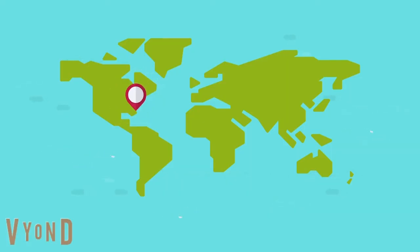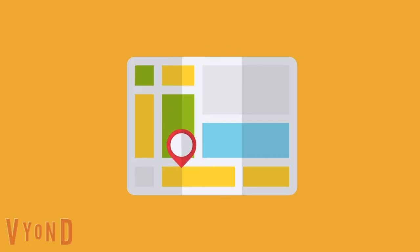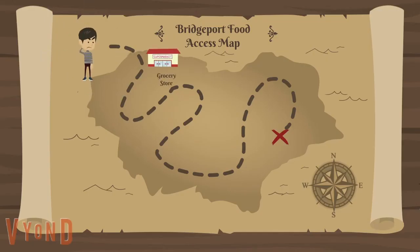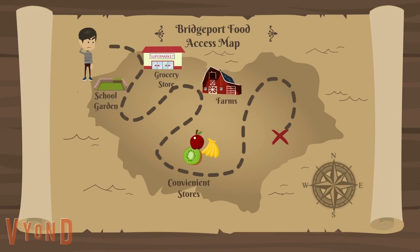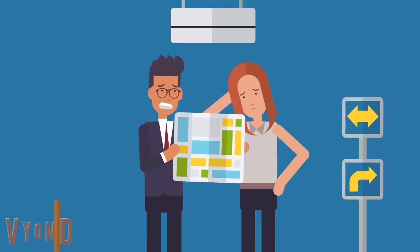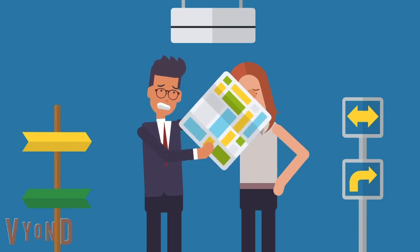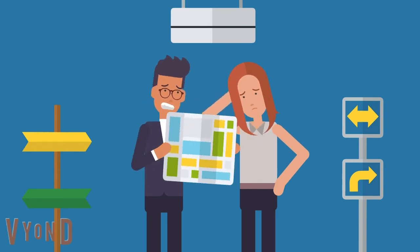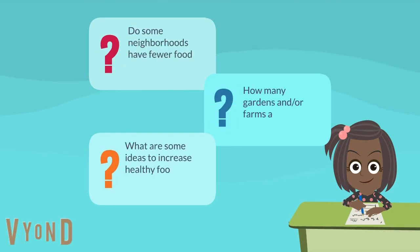In today's activity, you will be given a blank map. This map is the city of Bridgeport. Your task is to locate as many food access points as you can in your school community and in the Bridgeport community. Think of all the places near you that are food access points. After you have located as many access points as you can, your teacher will show you the answer key, and you will answer some critical thinking questions about food justice.